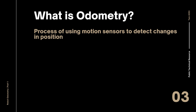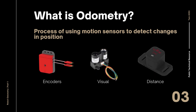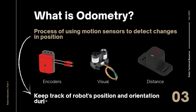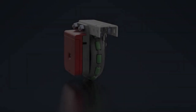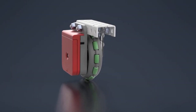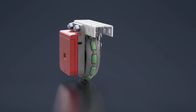Odometry is the general process of using motion sensors of any kind to detect changes in position, the most common of which are encoders, visual, and distance sensors. Using odometry, we can create an absolute positioning system to keep track of the robot's position and orientation during the entire length of a game autonomous or programming skills run. First, let's go over how such a system is created, then we'll talk about the strengths and weaknesses of using odometry. We will be focusing mainly on the use of encoders to develop our odometry system.